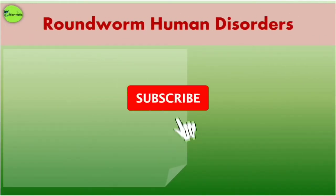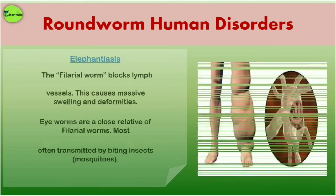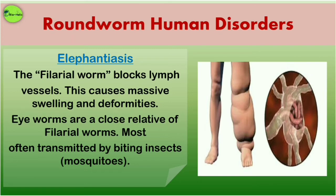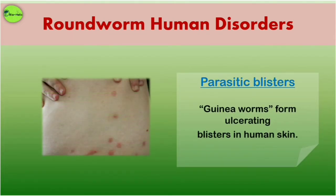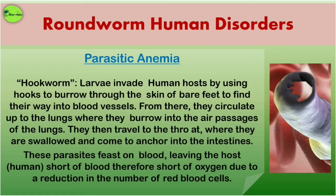Roundworm-related human disorders: since roundworms are endoparasites they can cause different human disorders. Elephantiasis — the filarial worm blocks the lymph vessels causing massive swelling and deformities. Eye worms are also close relatives of filarial worms and are most often transmitted by biting insects like mosquitoes. Parasitic blisters — Guinea worms form ulcerative blisters in human skin. Parasitic anemia — the hookworm causes this anemia; its larvae invade the human host by using hooks to burrow through the skin of bare feet and find their way into blood vessels.